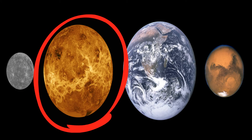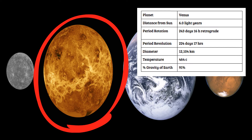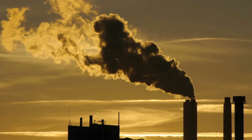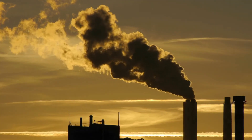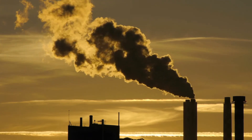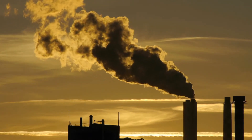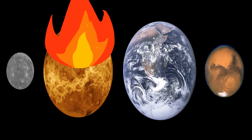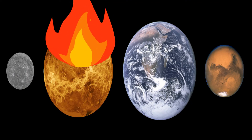Venus is the second planet from the sun. It orbits the sun every 224 days, and it also has the longest rotational period of 243 days of any other planet in the solar system, and it also rotates in the opposite direction. Its atmosphere is mainly carbon dioxide, which causes a great greenhouse effect, and therefore it has the greatest surface temperature of any other planet in our solar system.